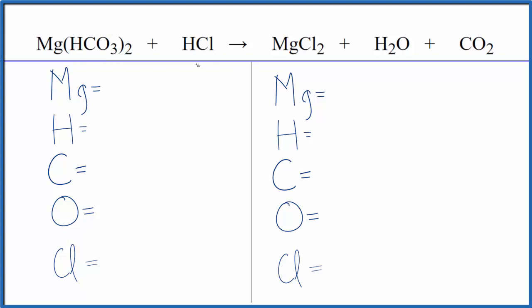The first thing we'll do is count the atoms up. We need to be careful with this equation. One magnesium, and then we have two - it applies to everything here. So two times one, two hydrogens, and there's a hydrogen here in the HCl. So we have three hydrogen atoms, two times one, two carbons, two times three, six oxygens, and just one chlorine.